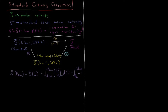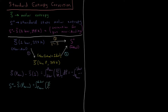For process two, the final state is the standard state, so we have the standard entropy minus the molar entropy at that low pressure. That equals the integral from one bar down to the low pressure approaching zero of the partial derivative of entropy with respect to pressure at constant temperature, dP. There is a useful Maxwell relation we can apply to simplify this.